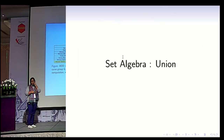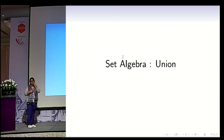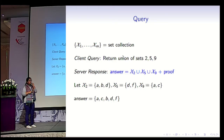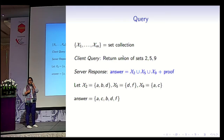We now discuss the union operation. The query is over a collection of sets chi_1 through chi_l, and the client queries the union of certain indices. For example, in our running example, the client asks for the union of sets 2, 5, and 9. The server responds with the answer — the union of these three sets — along with a proof of correctness.